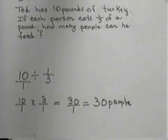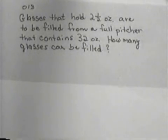When you're splitting it up, dividing it up, it's division. Let's look at one more example. Glasses that hold two and a half ounces are to be filled from a full pitcher that contains 32 ounces. How many glasses can be filled? So we have a large pitcher of some kind of drink that's filled and it contains 32 ounces. From that pitcher we've got to pour out little glasses that are going to hold two and a half ounces. So we're going to start filling the individual little glasses and the question is how many glasses can we fill.